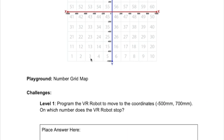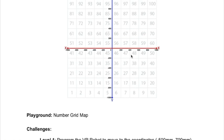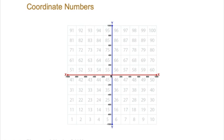In the first challenge it says program the VR robot to move to the coordinates negative 500, 700. So negative 500 and then up to 700. I'm going to come here to zero, move over to negative 500 which is right here, move up to 700, and my answer is going to be 83.